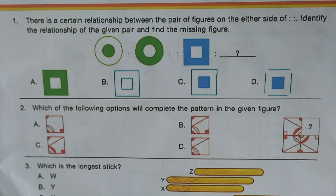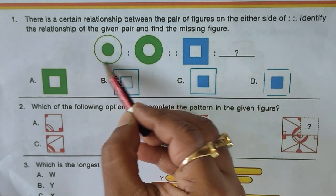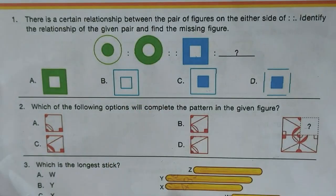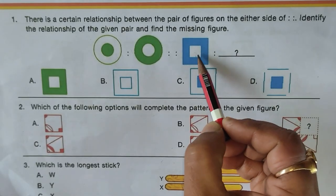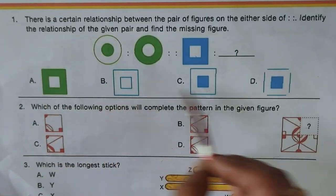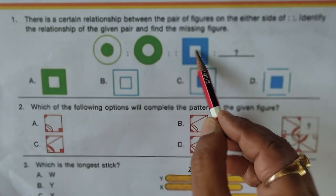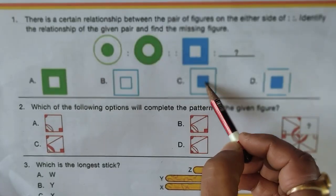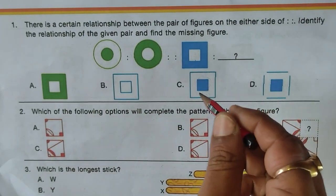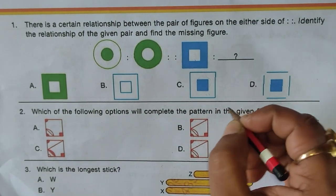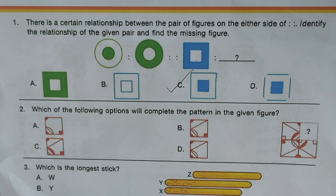Next question: there is a certain relationship between each pair of figures — identify it and find the missing figure. A white circle outermost and a green innermost reverses to green outermost and white innermost. Following the same rule, blue becomes innermost and white becomes outermost. So outside is white and inside is blue — option C is the right answer.